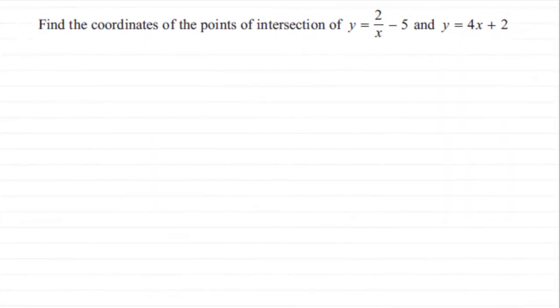Hi. Now in this example it's about finding the points of intersection of two graphs. We've got to find the coordinates, the points of intersection of y equals 2 over x minus 5 and y equals 4x plus 2.